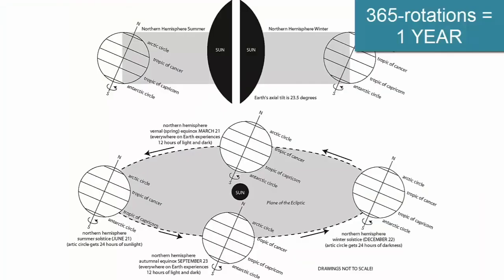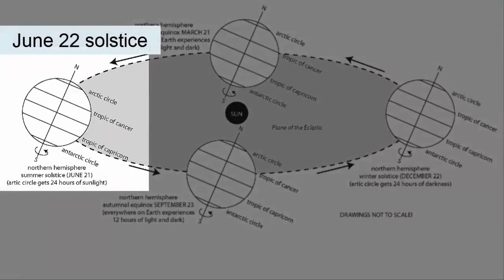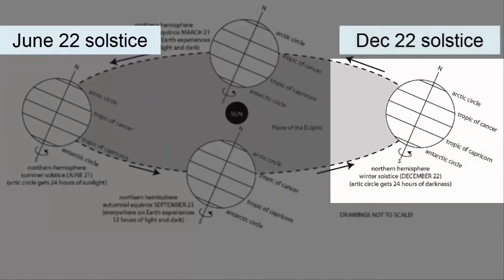Let's return to the tilted axis of the Earth. As the Earth orbits the Sun, it goes through 365 daily rotations while the axis maintains its tilt. On the June 22nd solstice, the tilt causes the North Pole to face towards the Sun, while the South Pole faces away. When the Earth's orbit takes it all the way around to the December 22nd solstice, the North Pole is now tilted away from the Sun and the South Pole towards.